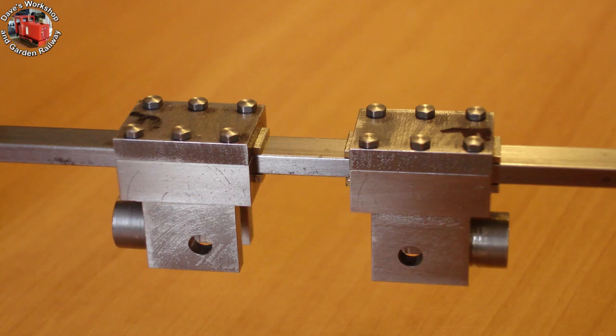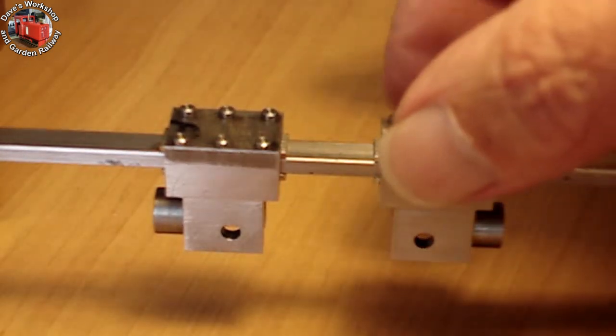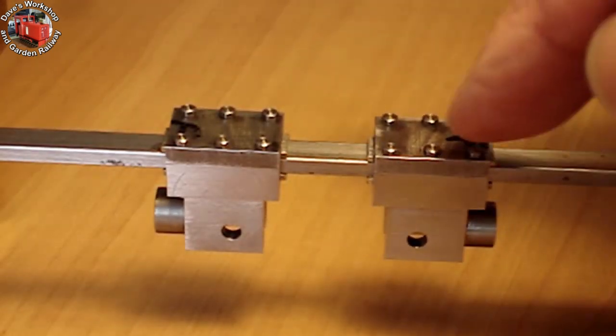Here are the two mostly complete cross heads on a piece of slide bar material. These are free sliding on the bar. A couple of thou clearance here and there.